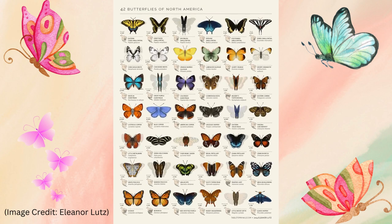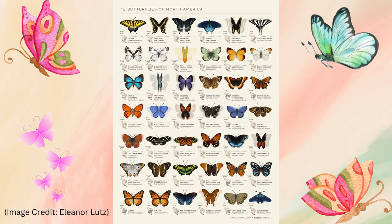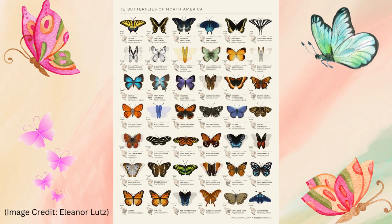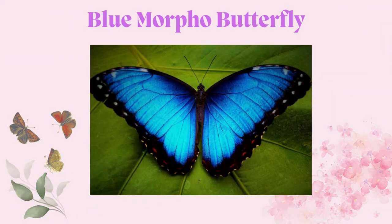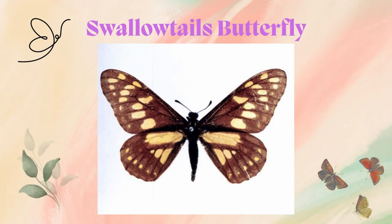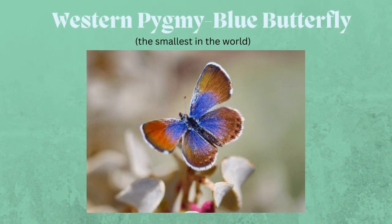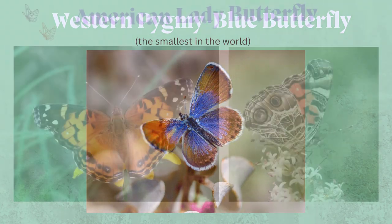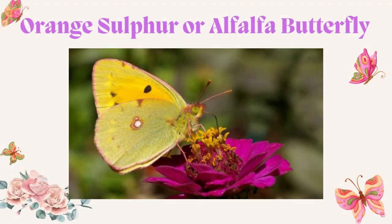Here is the list of 42 butterflies of North America. Among the common ones is the Blue Morpho Butterfly, Swallowtail Butterfly, Western Pygmy Blue Butterfly — which is also the smallest in the world — American Lady Butterfly, and the Orange Sulphur or Alfalfa Butterfly.